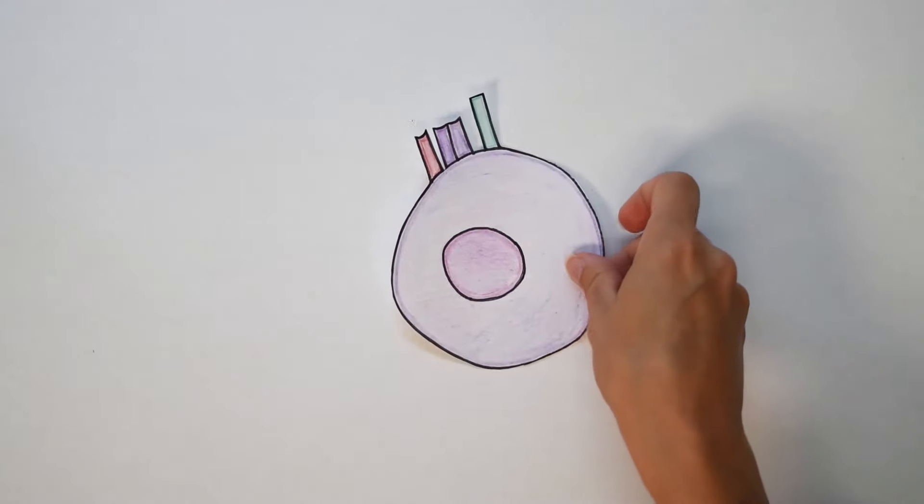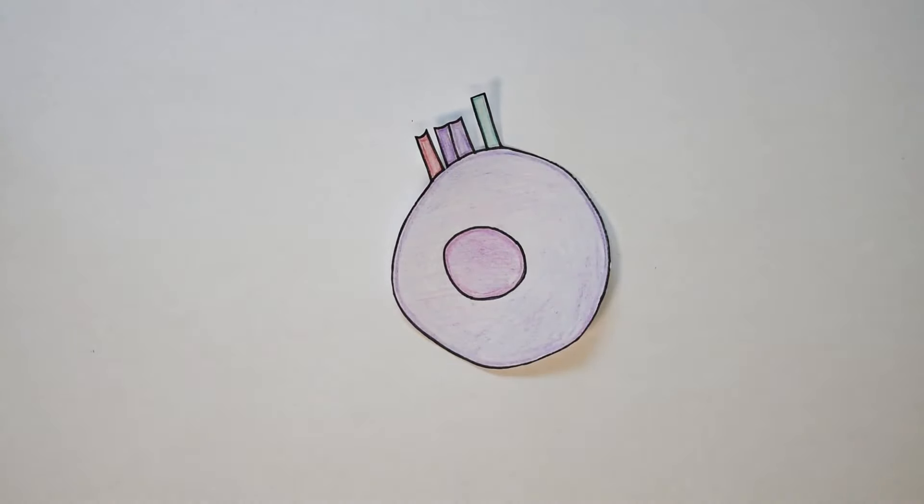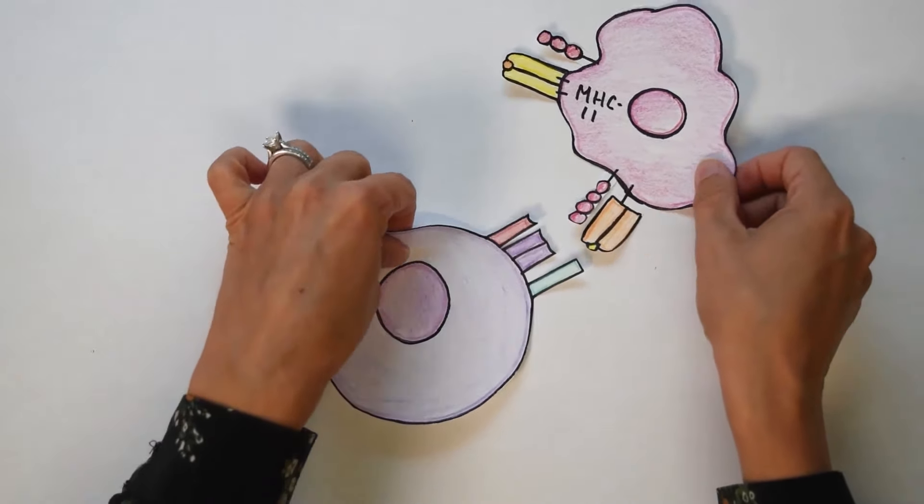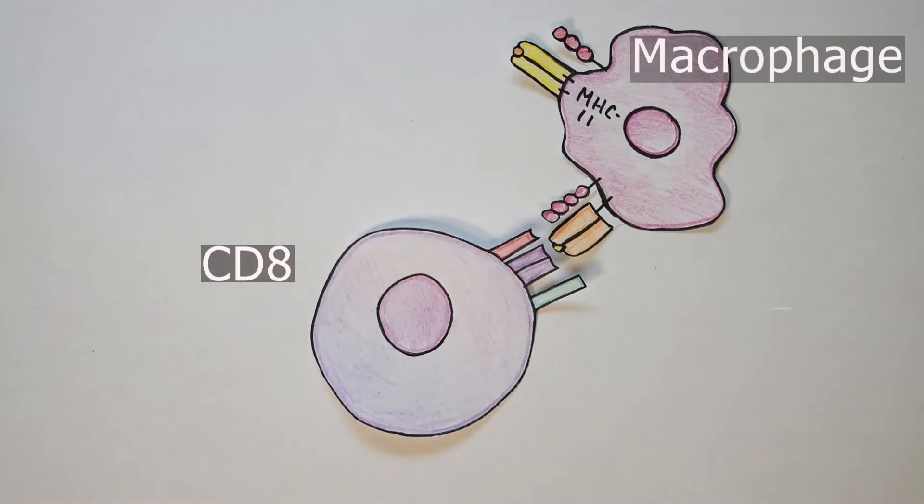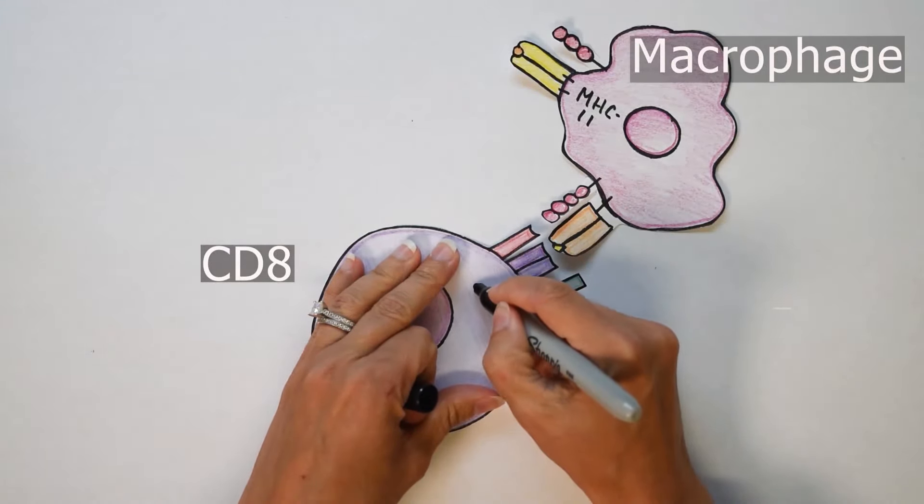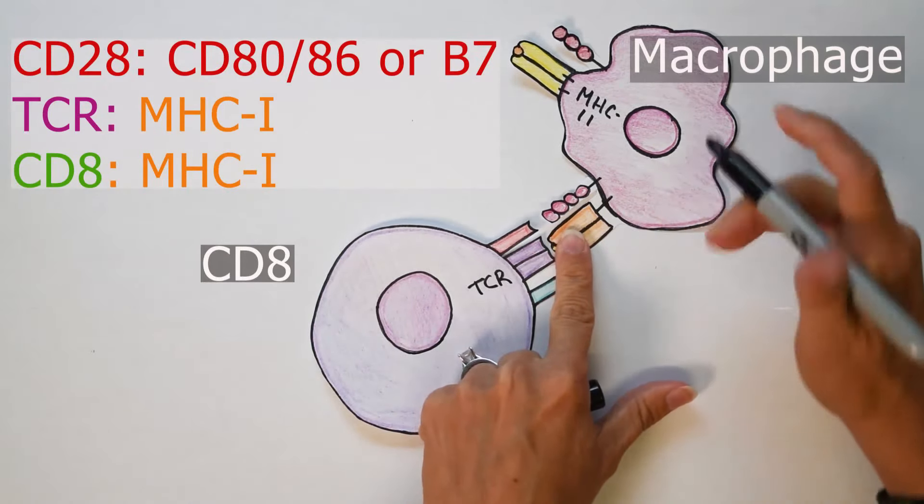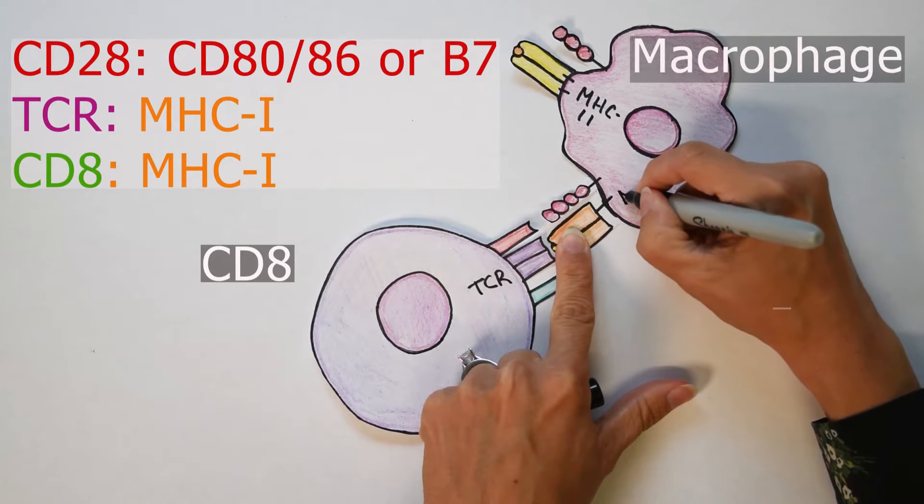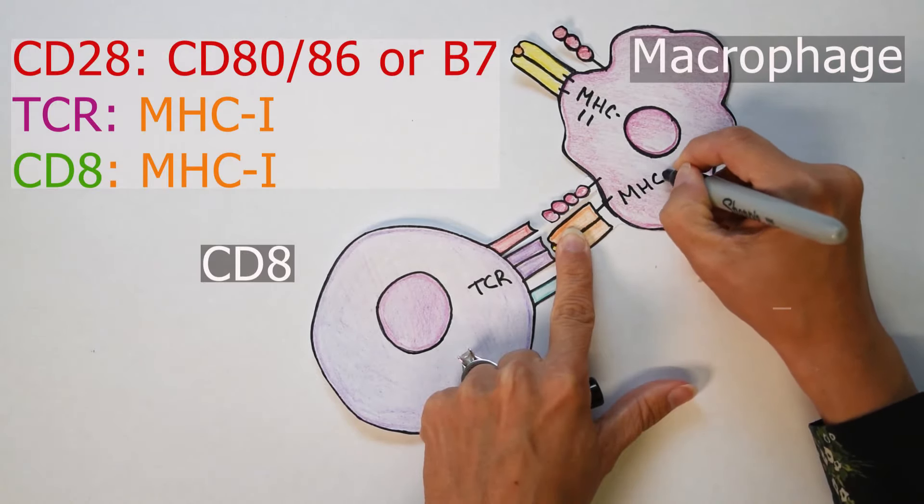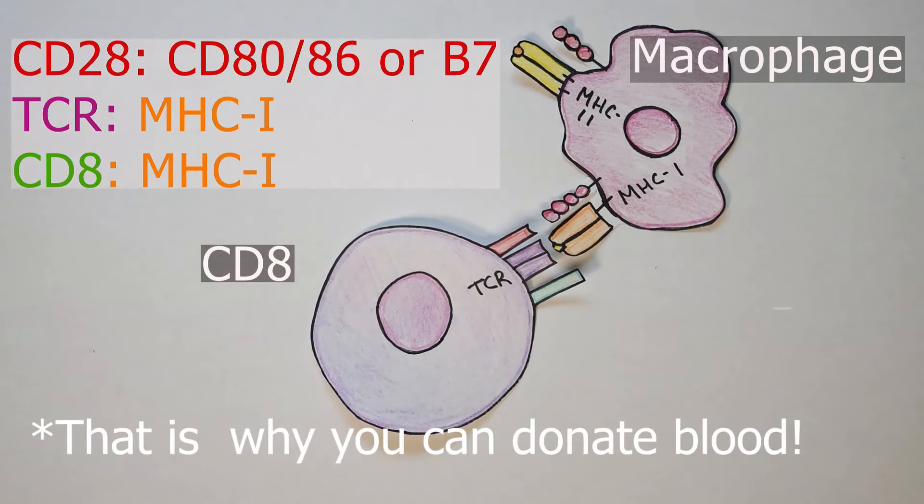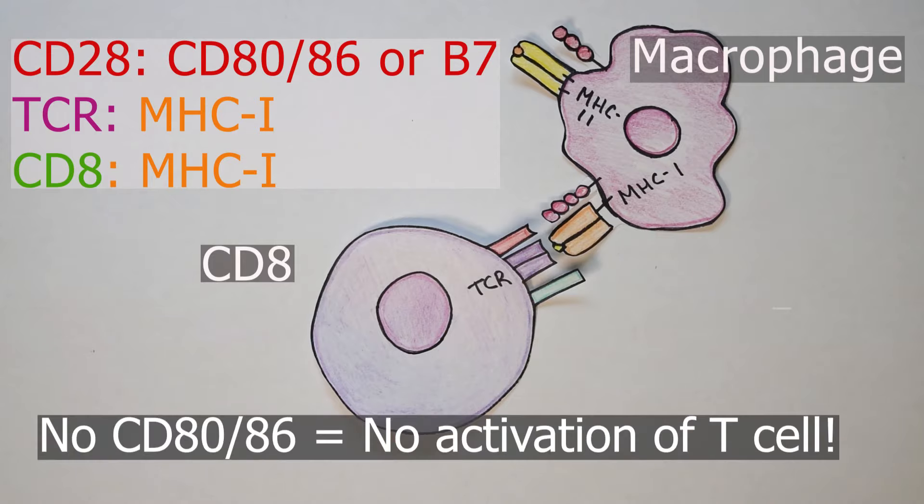Now I'll show you what happens with a CD8 T cell. Hopefully you're seeing a pattern here. It's going to interact with this macrophage but it's going to actually bind to a different receptor. The CD8 T cell also has a T cell receptor in purple and it's binding orange MHC class 1. Now MHC class 2 is only expressed on antigen presenting cells like macrophages. Whereas MHC class 1 is basically your name tag. It's present on every cell in your body except for your red blood cells. So as long as the danger signal in red CD28 and CD86 is there, you will have an activated T cell.